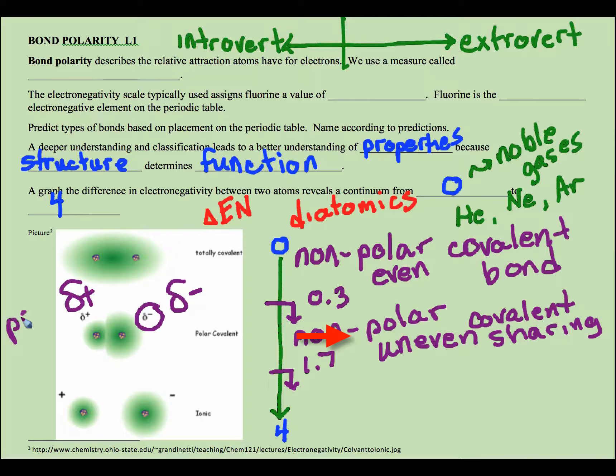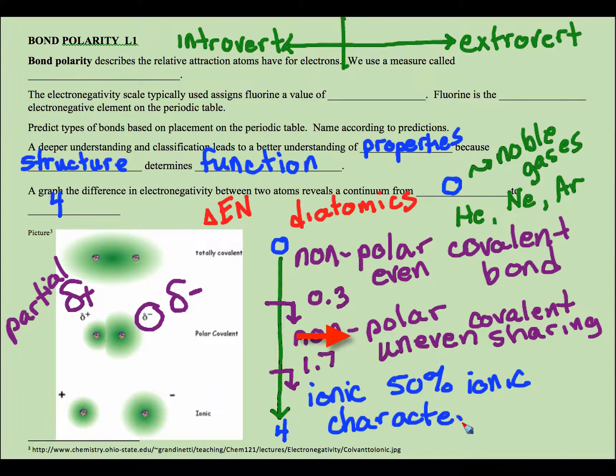Now if we are above 1.7, we're going to classify it as ionic, and the reason is it typically is going to display 50 percent or more ionic character, those properties that we expect from an ionic compound. Just like here at some point we're going to say, well, you know, most of the time they function in a manner that's very extroverted. They are very energized by being with people, so we're just going to classify that group as extrovert.